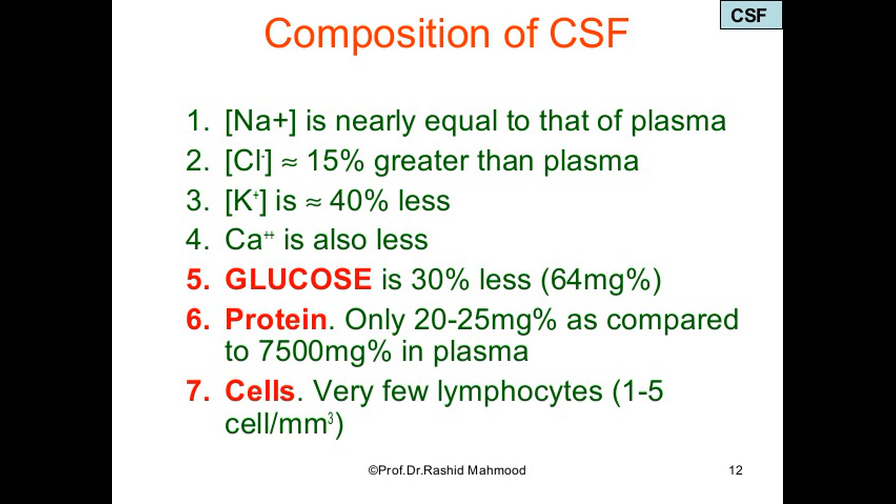Potassium is approximately 40% less, calcium is also less, and glucose is 30% less. In CSF, the amount of glucose is 64 mg%. Protein is only 20-25 mg% as compared to 7500 mg% in plasma. Cells: very few lymphocytes, 1-5 cells/mm³, and there are no RBCs in CSF.